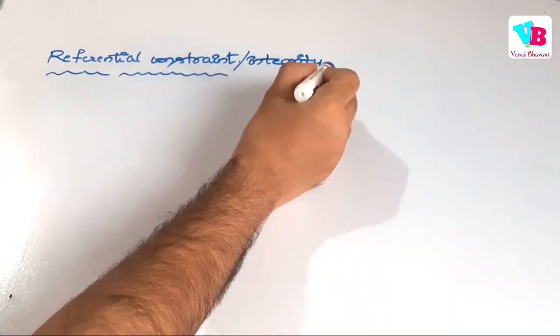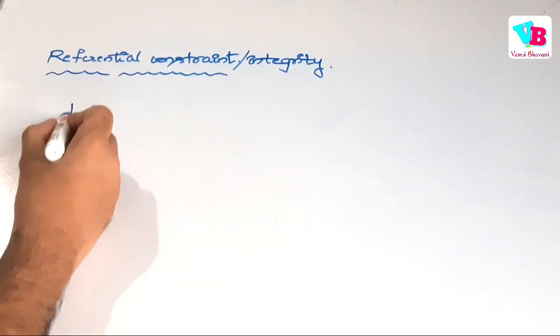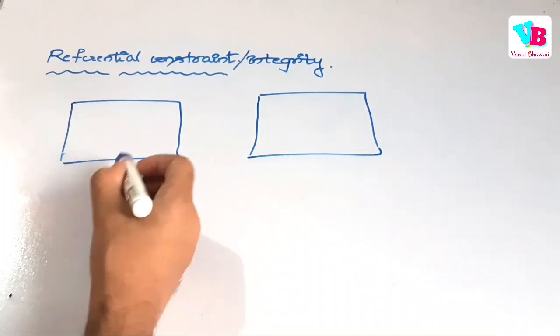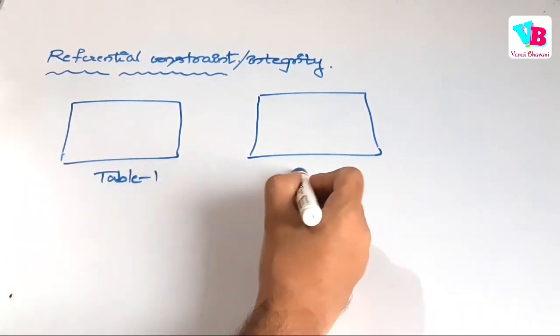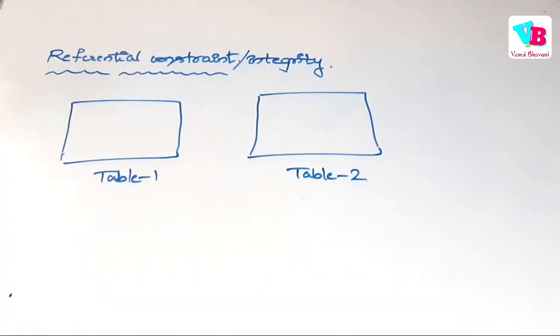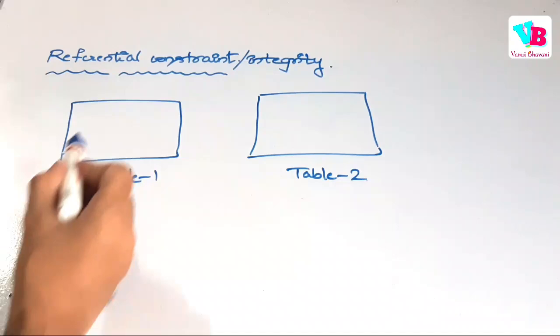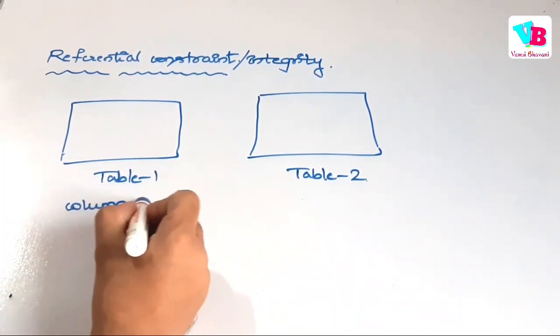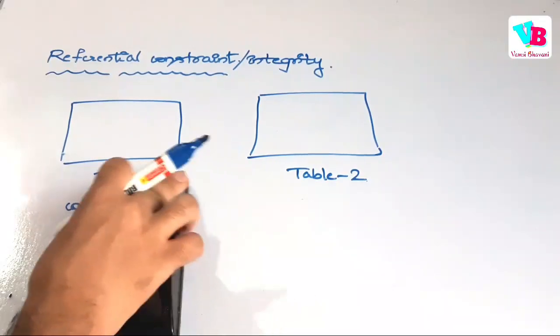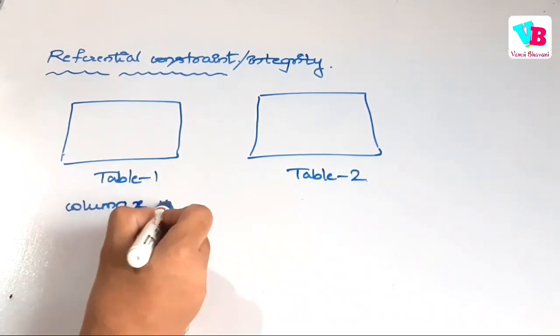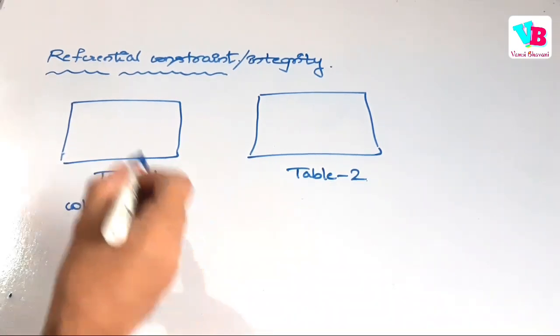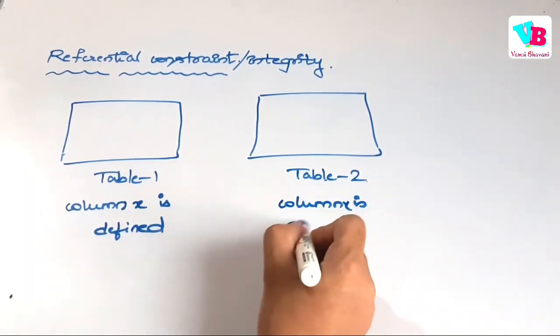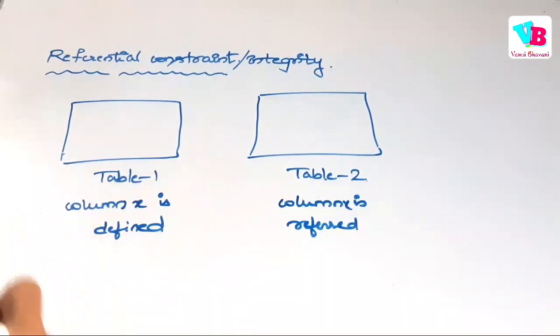Basically, this integrity constraint involves two tables. This table is table 1 and this table is table 2, or relation 1 and relation 2. The point is, basically, this table has one column. Let's say column X. Column X is basically defined first time in table 1, and column X is referred to. Let me tell you.